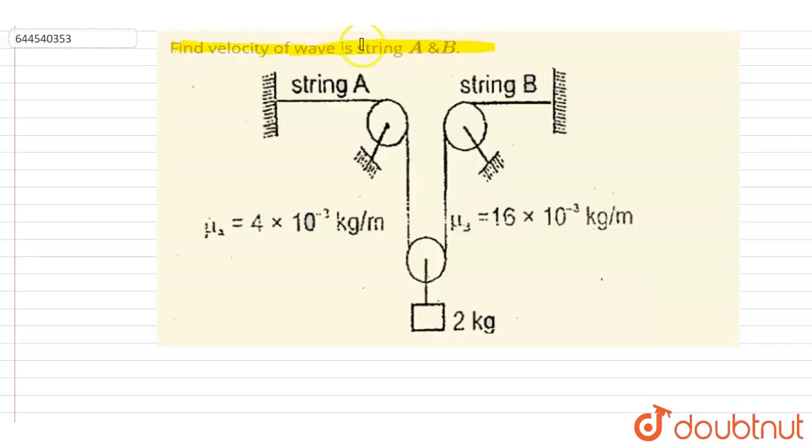wave in string A and B. So if you see, these are string A and B. This is a 2 kg mass, and the mass per unit length is so small.